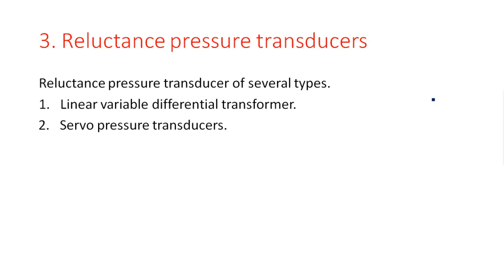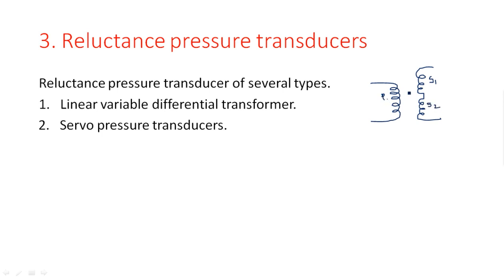Linear variable differential transformer — we have already studied this in the LVDT topic. So, input voltage is applied to a primary coil, and two secondary coils are there. This is secondary coil 1 and secondary coil 2, and this is primary winding 1. In between these two, one soft iron core has been inserted with a shaft.